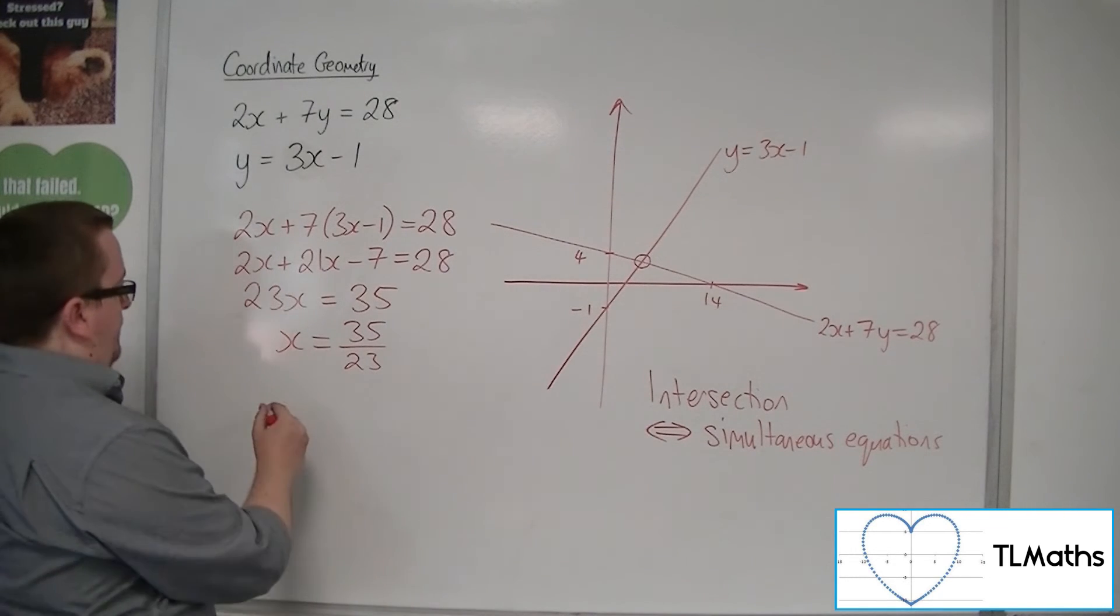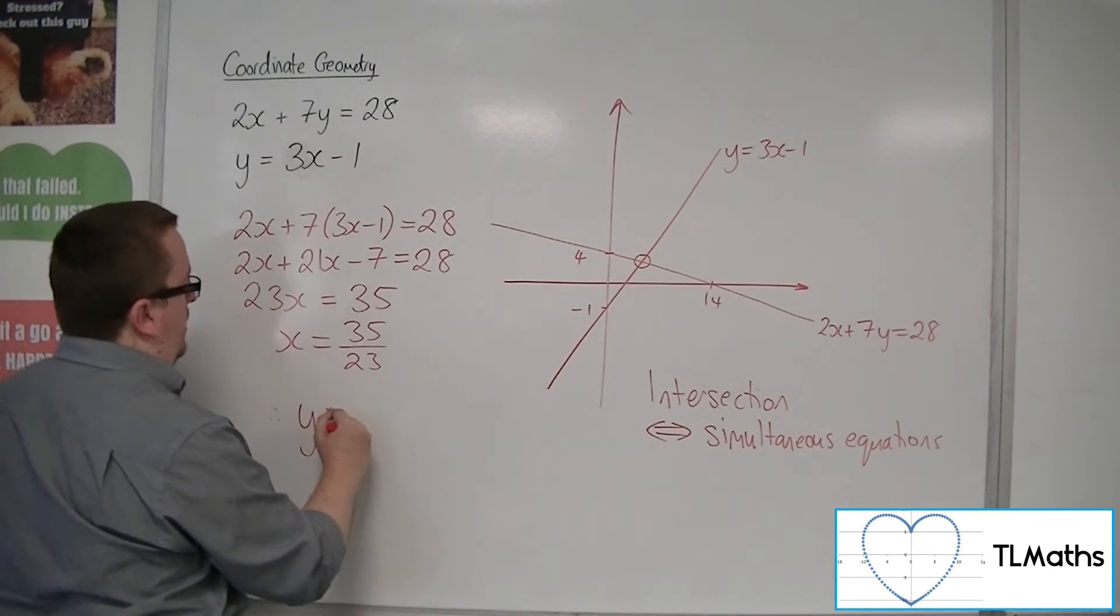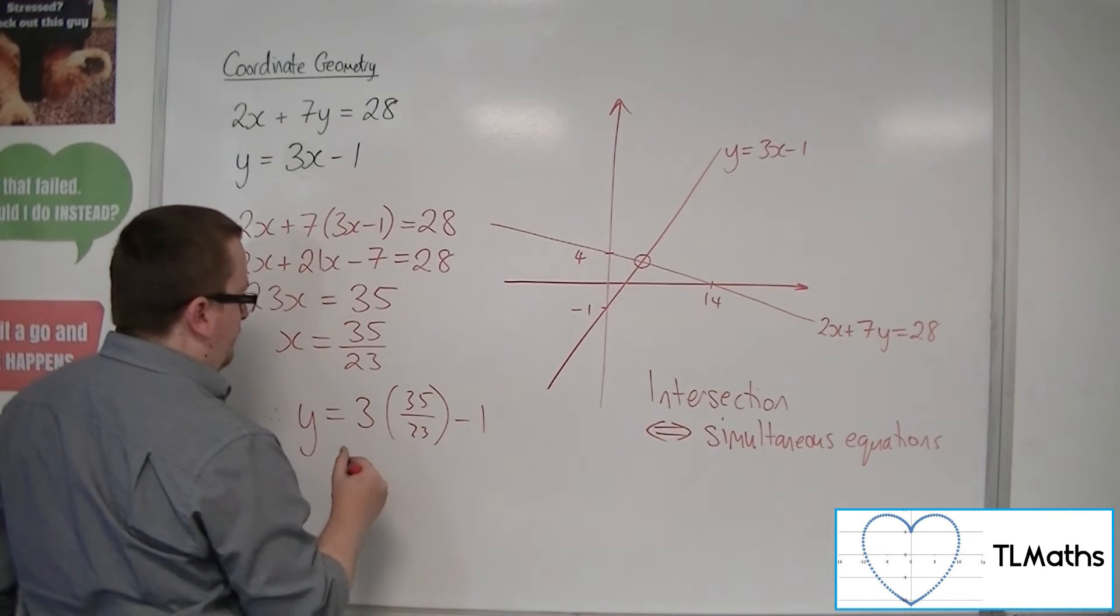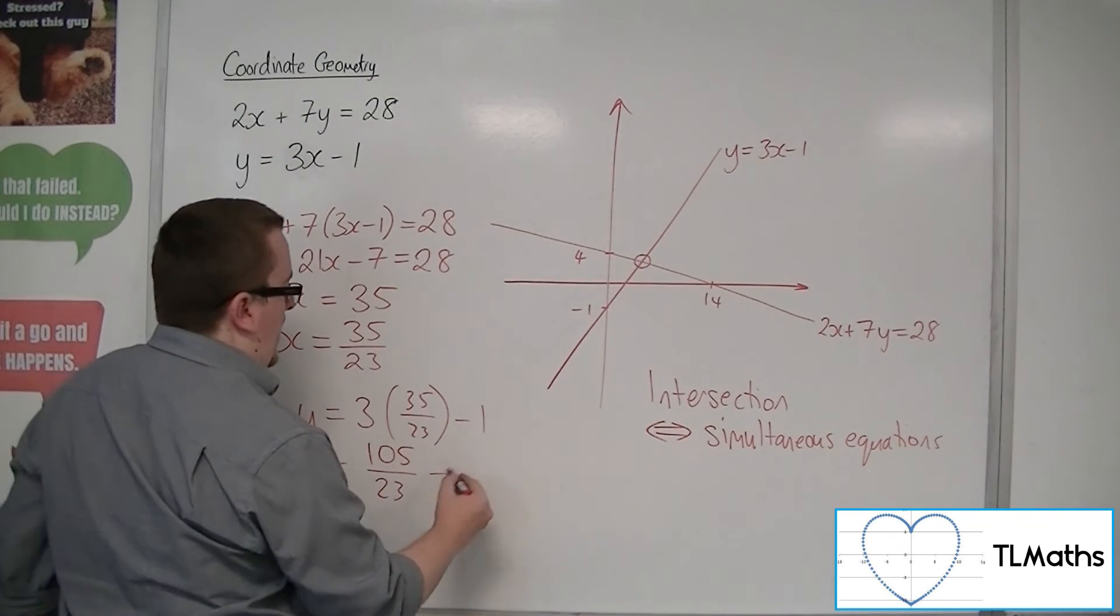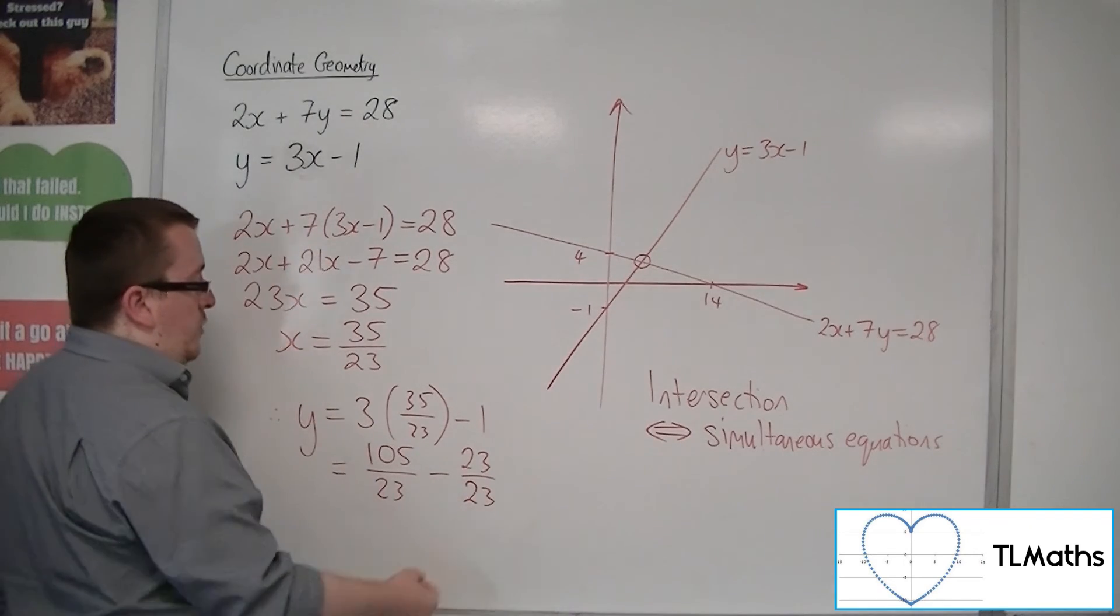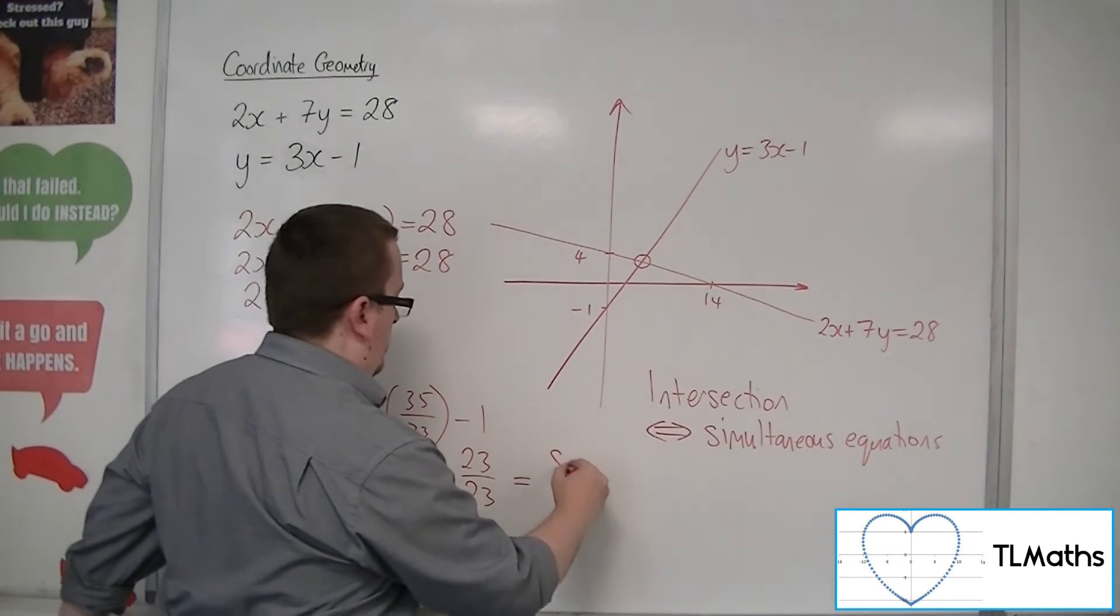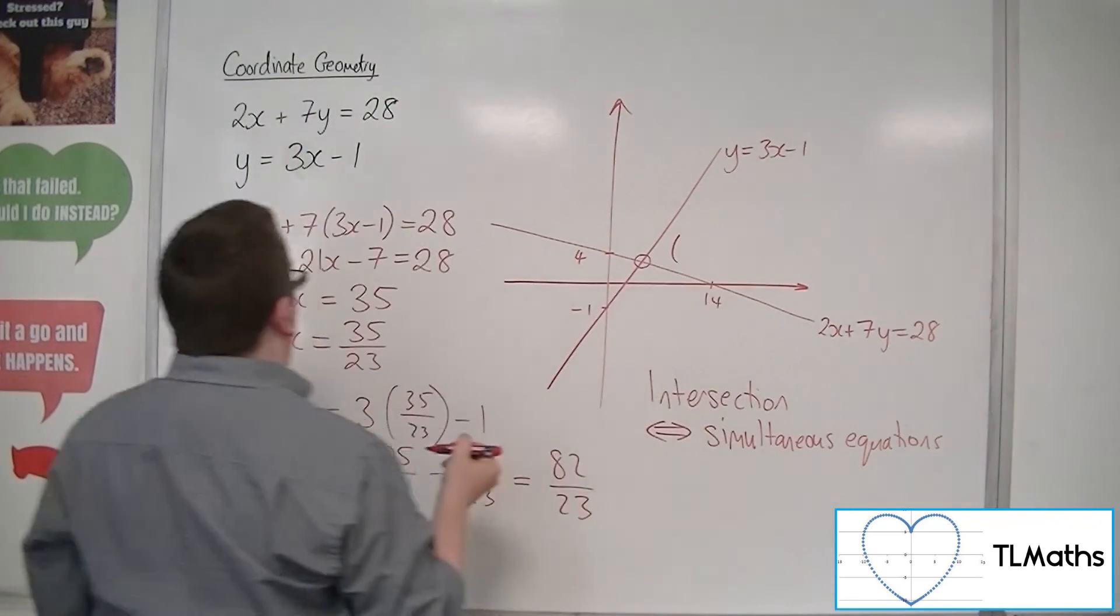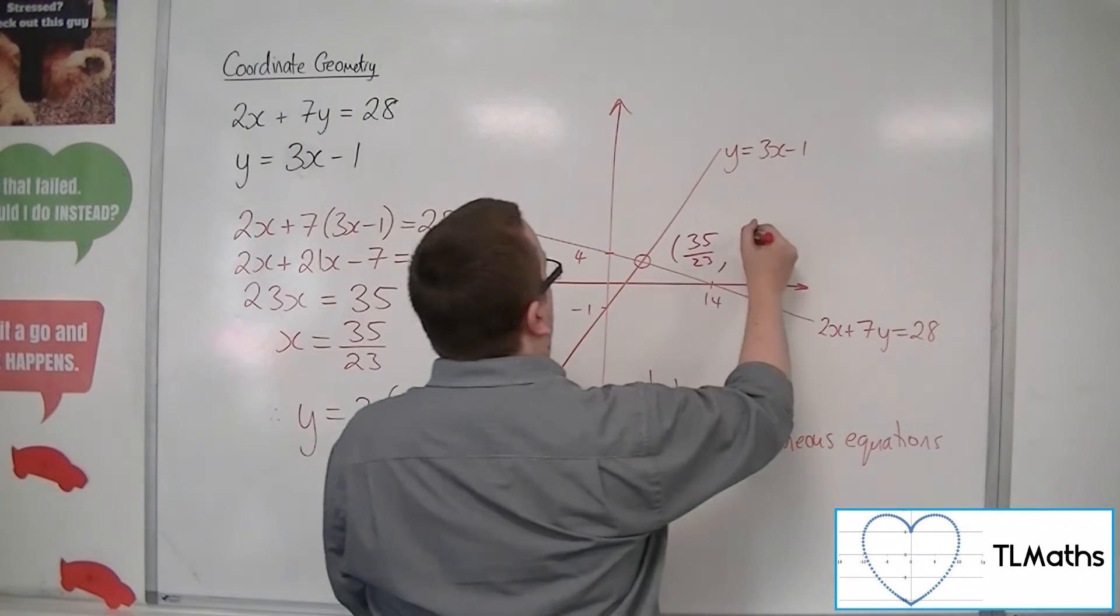I also need to find the y-coordinate. So if I substitute that back into one of the two previous equations, the second one looks like the easiest to work with. So y is equal to 3 lots of 35 over 23, take away 1. So 3 lots of 35 is 105. And 1 could be written as 23 over 23. So now that I've got a common denominator, 105 take away 23 is 82. So I have 82 23rds. So the intersection of those two lines occurs at 35 23rds, 82 23rds.